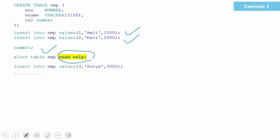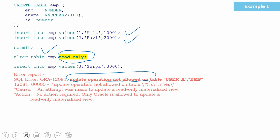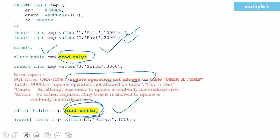Whenever someone tries to insert after this point, they will get an error saying that the update operation is not allowed on this table. Probably after some time we may want to populate a few more records into this table, and again convert it to a read-only table. To make a read-only table back into an editable table, we execute the DDL statement: ALTER TABLE table_name READ WRITE. The key learning here is two keywords: READ ONLY, which makes the table read-only, and READ WRITE, which enables the table for DML operations. Let's see a simple demo for this.